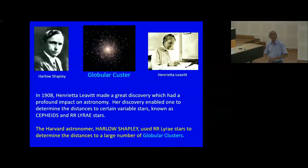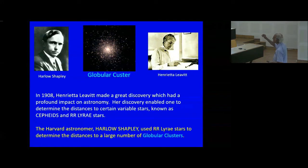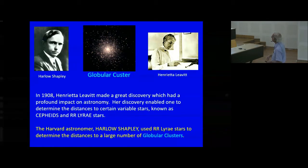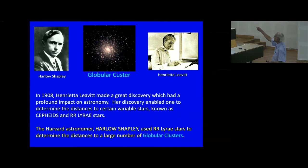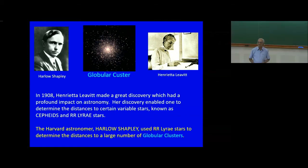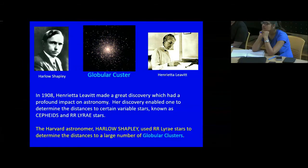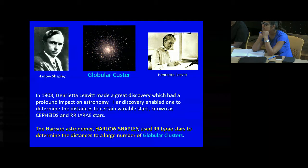What Hubble did in 1923 was to discover one of these Cepheid variables in the Andromeda Nebula. At that time, people believed the Andromeda Nebula was part of our galaxy. Using Henrietta Leavitt's relationship, Hubble discovered that the distance to the Andromeda Nebula was 3 million light years, which was far more than the 50,000 light year size of our galaxy as estimated by Kapteyn. That is how Hubble came to the conclusion that the universe has lots and lots of galaxies. Today we know there are billions and billions of galaxies.